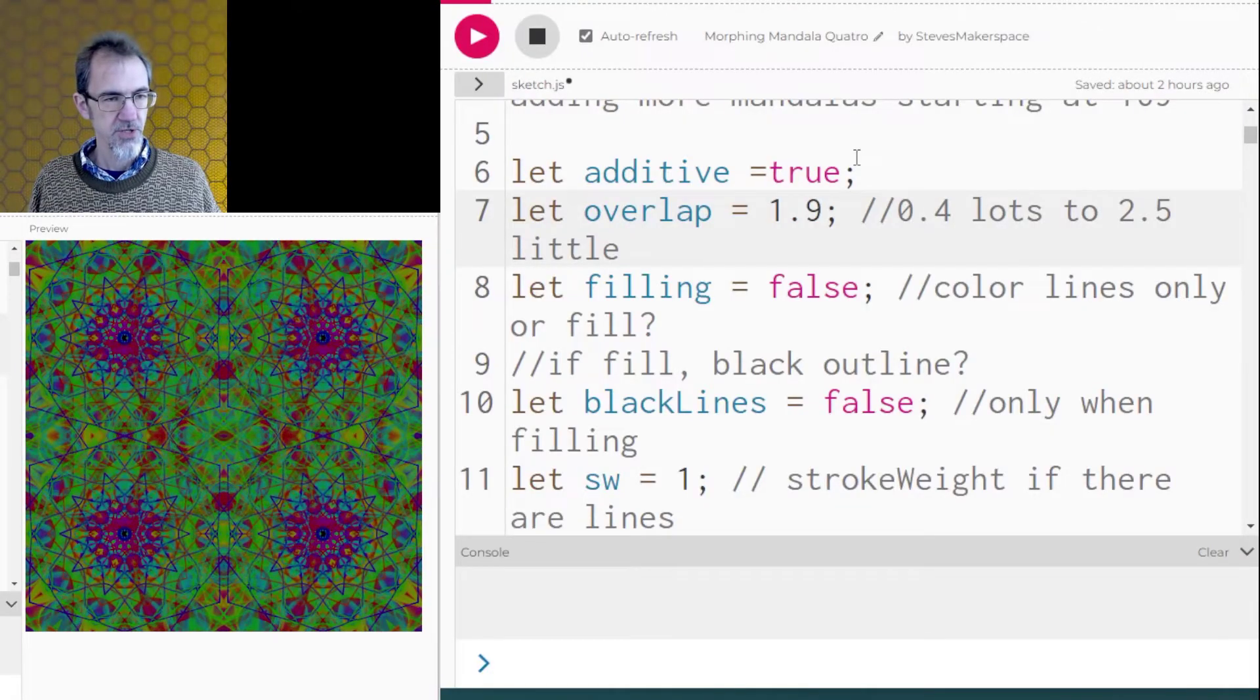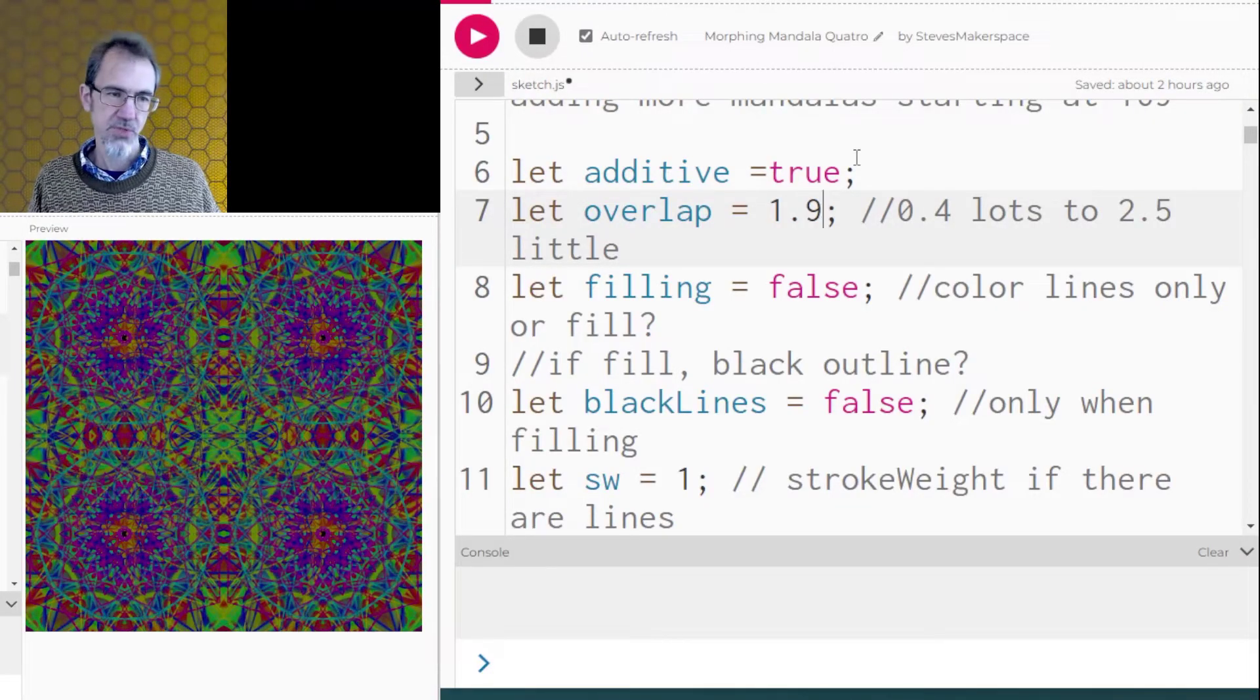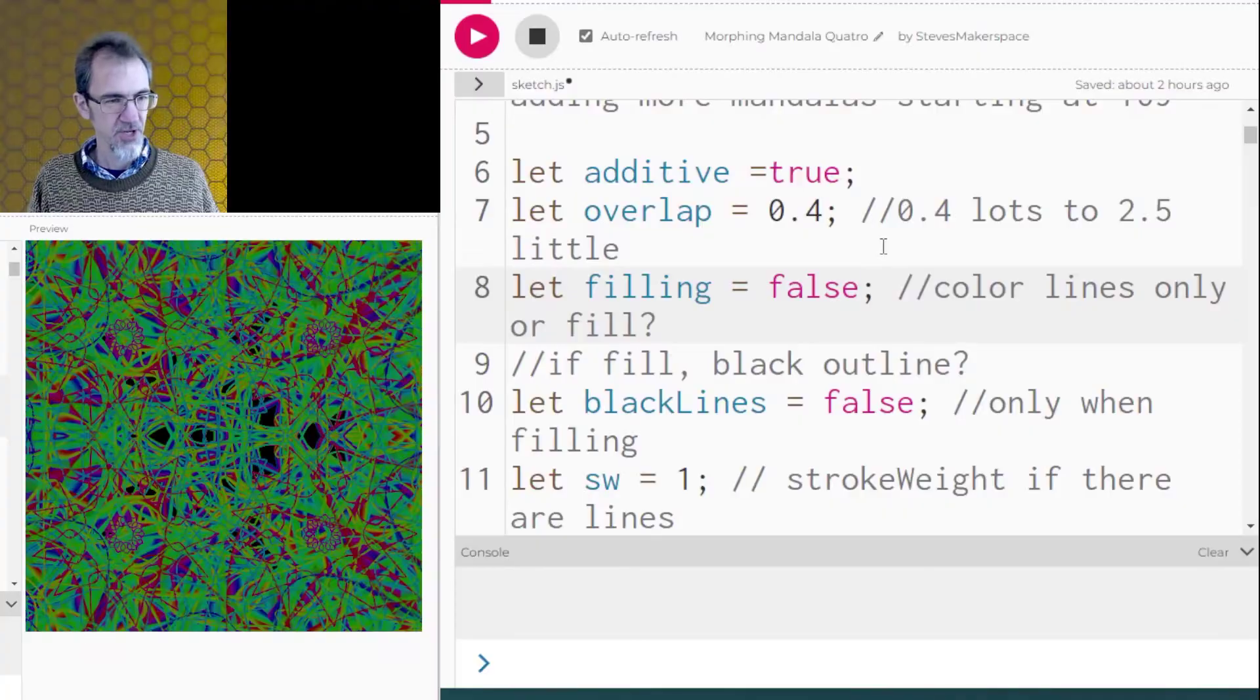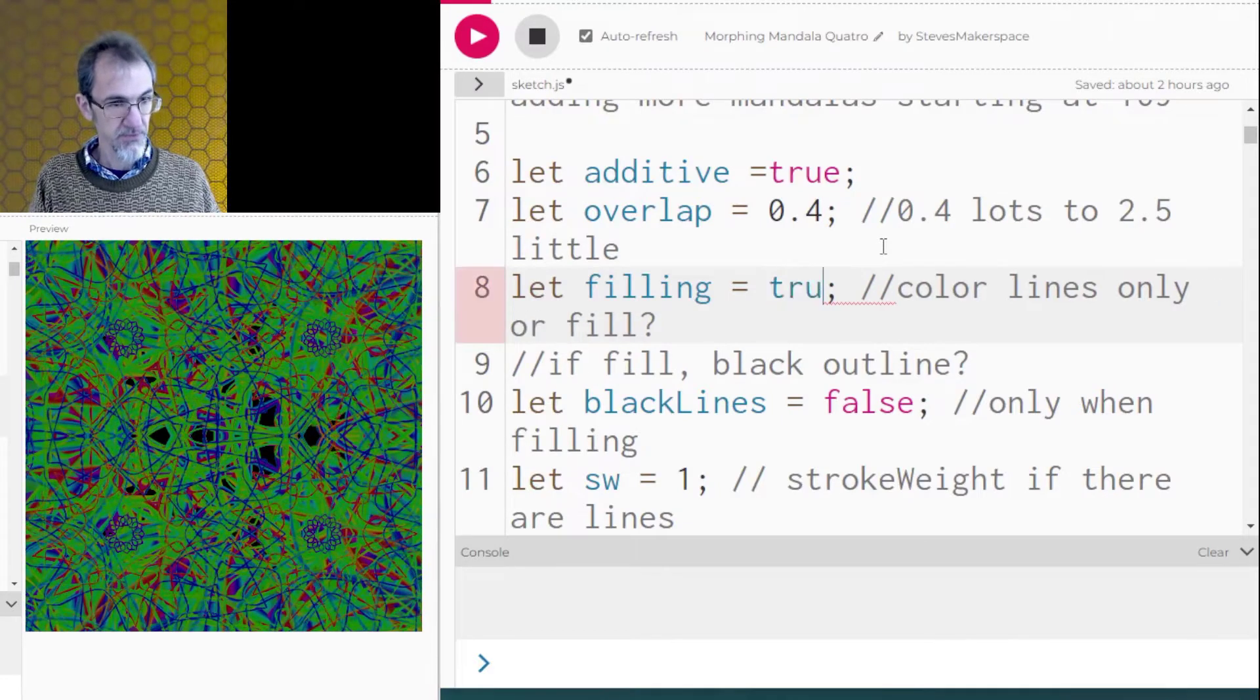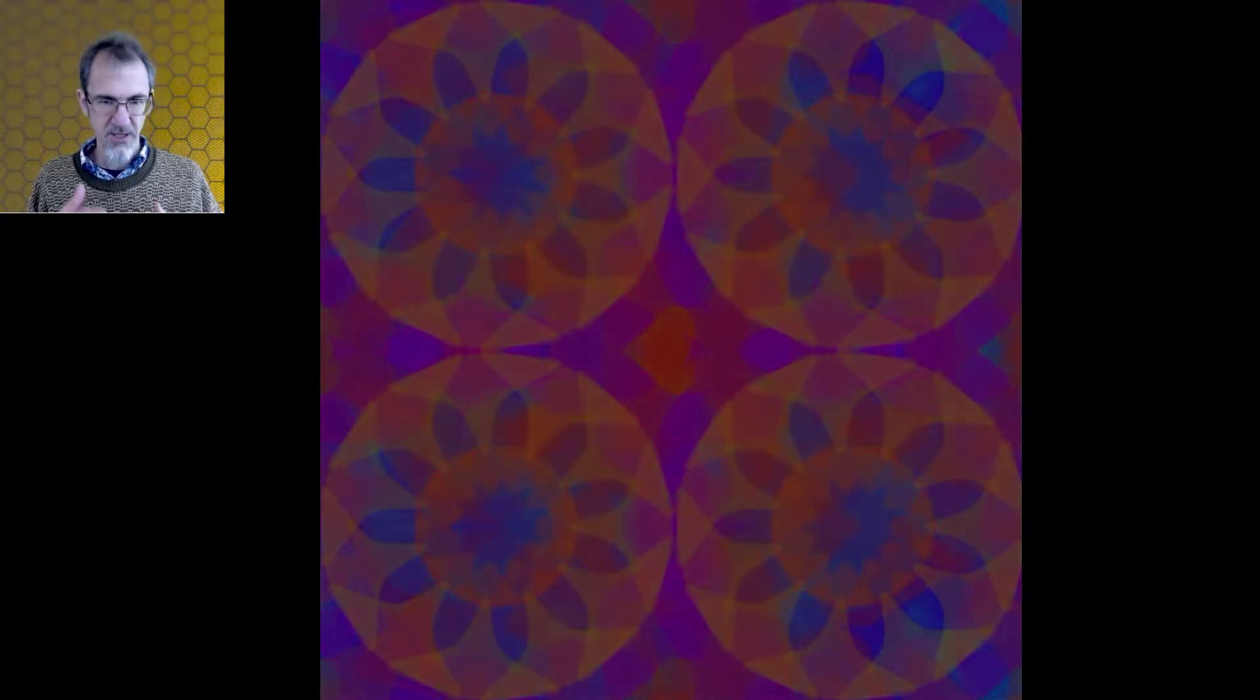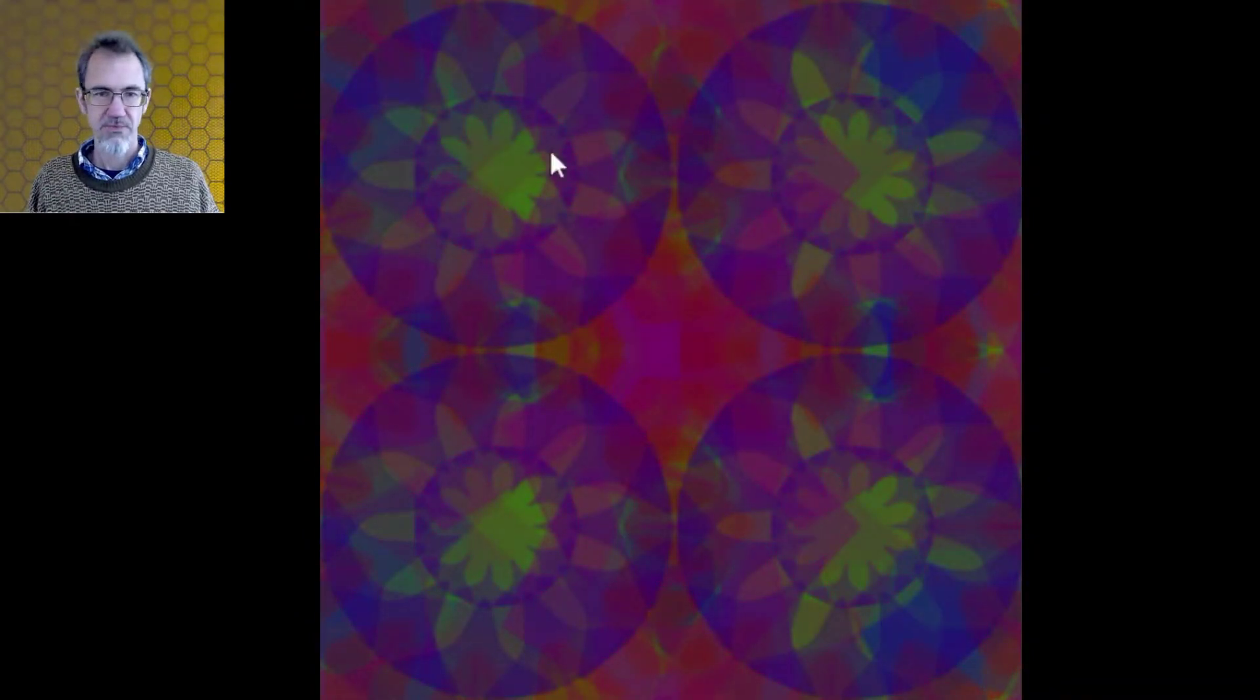We can also change this overlapping. So if I do 0.4 instead of 1.9 or whatever it was I just had, it's overlapping more. Doesn't look like much, to tell you the truth. Let's try switching it to filling instead of the lines. And so this is more overlapping, but filling. So it doesn't always give you a beautiful thing to look at. It kind of comes and goes. Sometimes it's kind of ugly and sometimes it's like, oh wow, that's cool. So if you see something you like, you can pause it and say, okay, I'll take a picture of that.